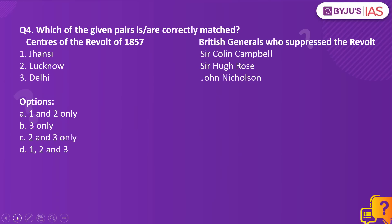Moving on to question number four: which of the given pairs is or are correctly matched? Centres of revolt of 1857 and the British generals who suppressed the revolt — number one: Jhansi, Sir Colin Campbell; number two: Lucknow, Sir Hugh Rose; number three: Delhi, John Nicholson.